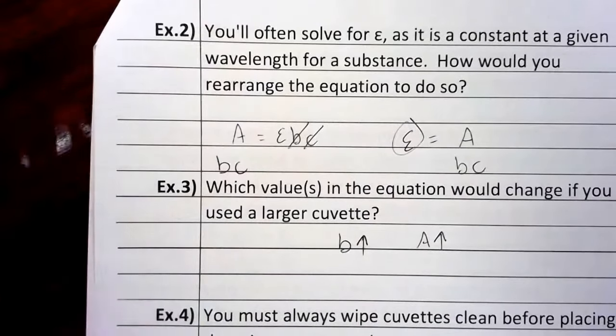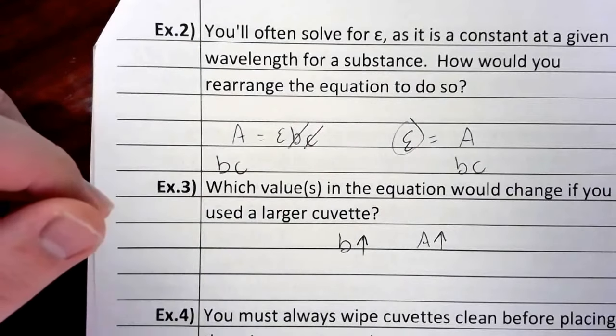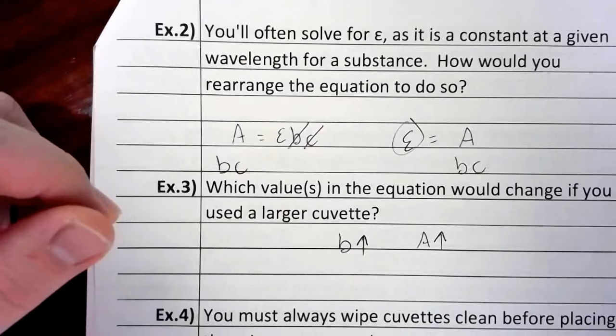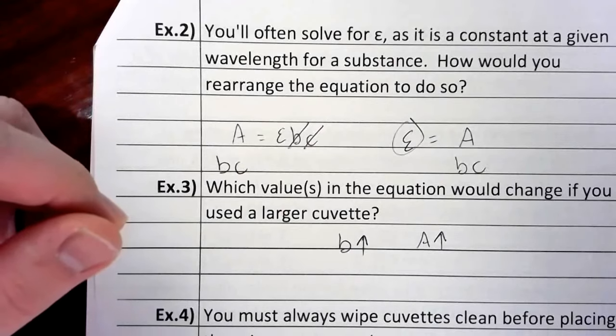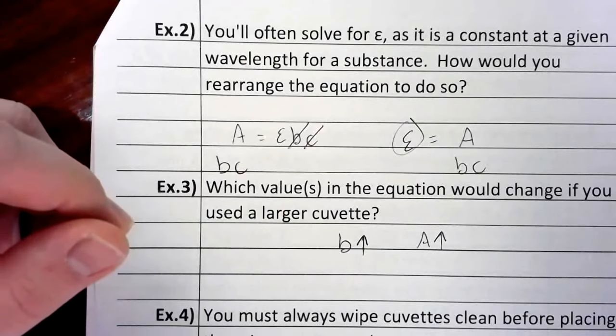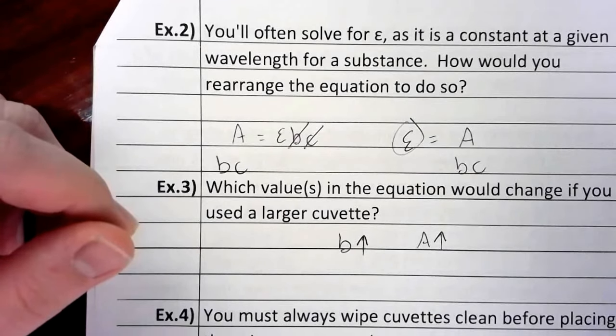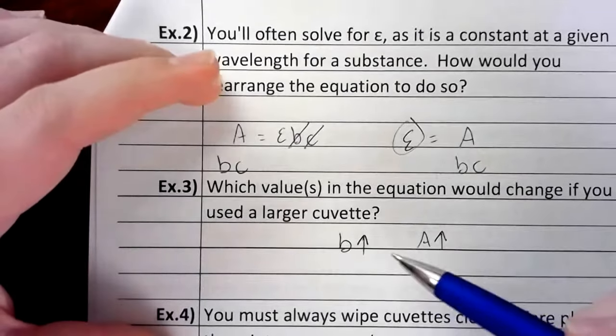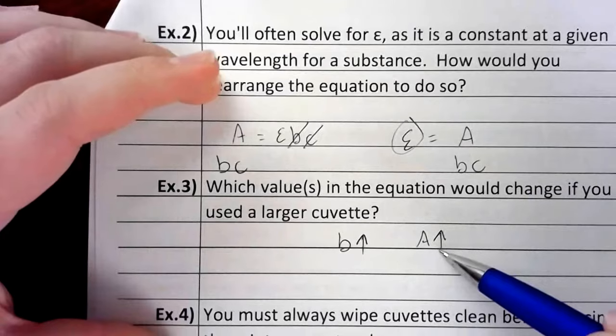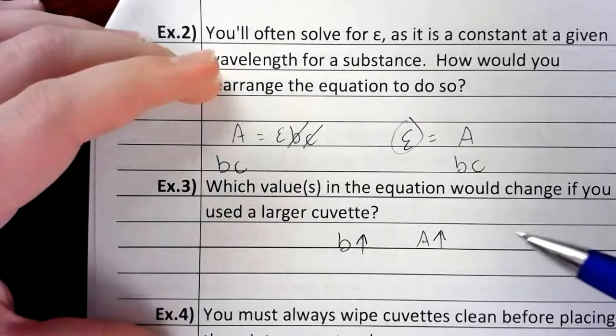So if you used a larger cuvette, b would increase, the path length would increase, and we'd expect the absorbance to increase with it. It's the same with glass. If I handed you a piece of cobalt glass, that bright blue glass that you guys may have used in the light lab. If you take one piece of blue glass, some light will get through it. The more layers of glass you add, the less light is going to make it through. So absorbance, the amount of light that's not making it through, will go up if the cuvette was larger.